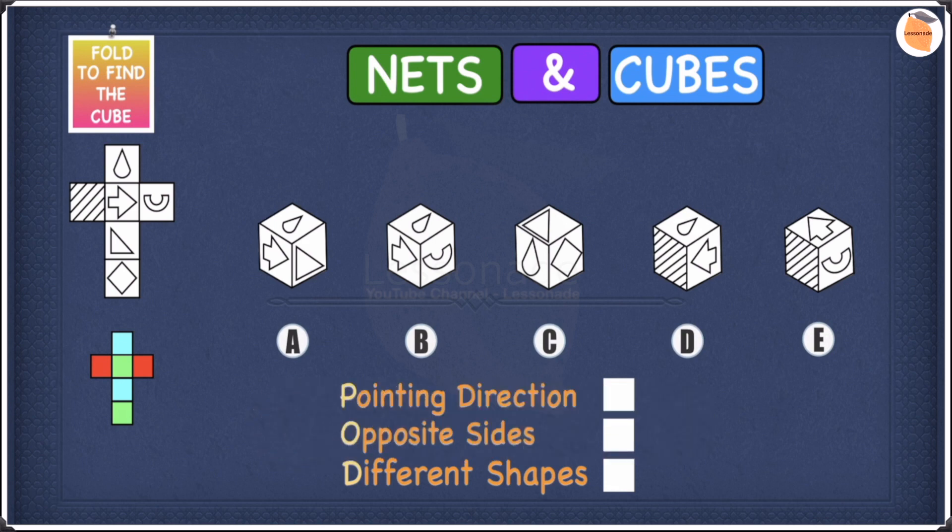Let's have a look at this example. In this example we're going to see which one of these cubes can be made from the net.